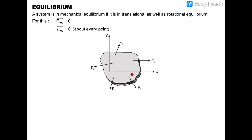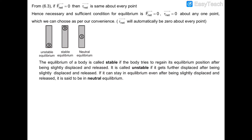The net force of these forces is zero, and therefore the torque acting on this object would be zero because the forces are acting in the same plane. We have already discussed in the previous video that if the net force acting on the system is zero, then the net torque would be the same about each and every point. So the necessary and sufficient condition for equilibrium is that net force should be zero as well as the torque acting about any one point should be zero.